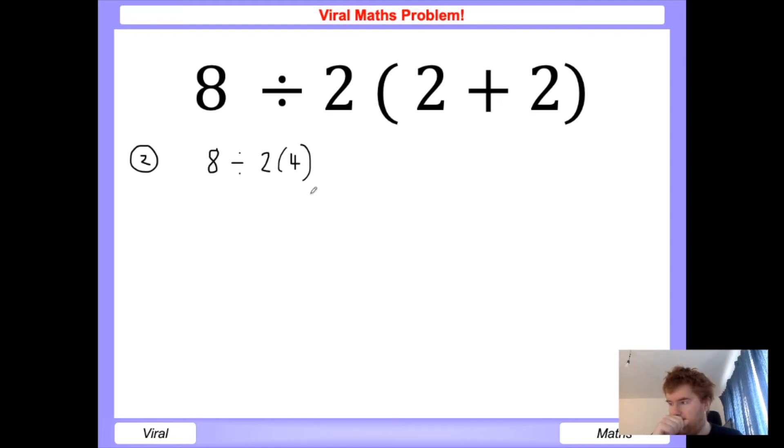is 4, and then times by 4 to get 16. This is incorrect, and this is why a lot of mathematicians say this is an ambiguous question. But I would argue it isn't, and the reason for that is when you have a multiplication here, you need to do that first. So we get 2 times 4, which is equal to 8, and then 8 divided by 8 is equal to 1. This is why